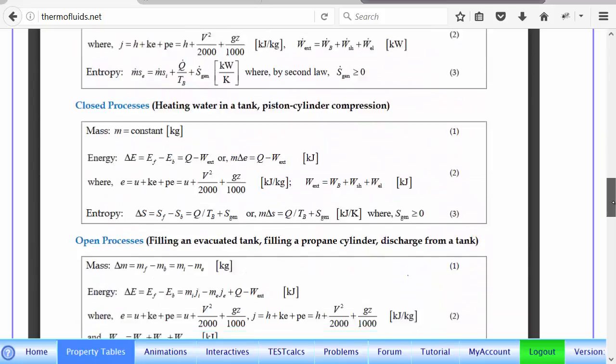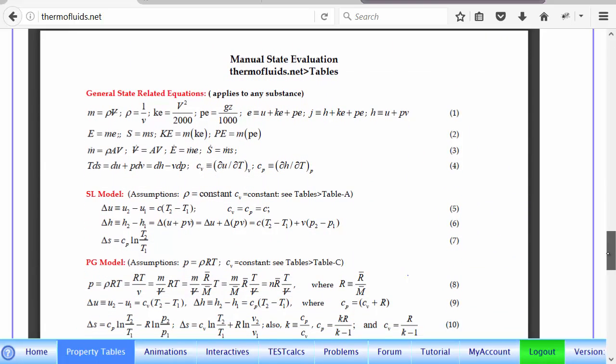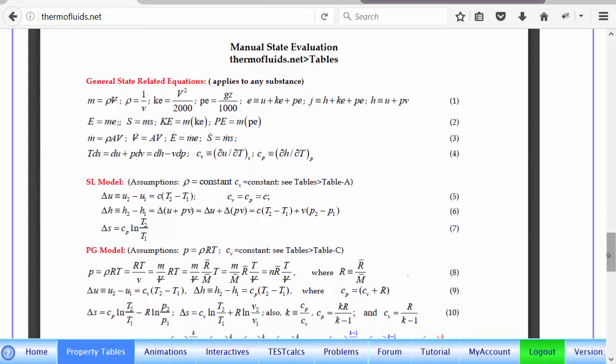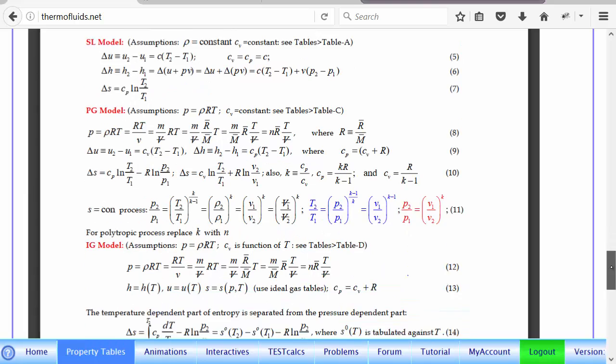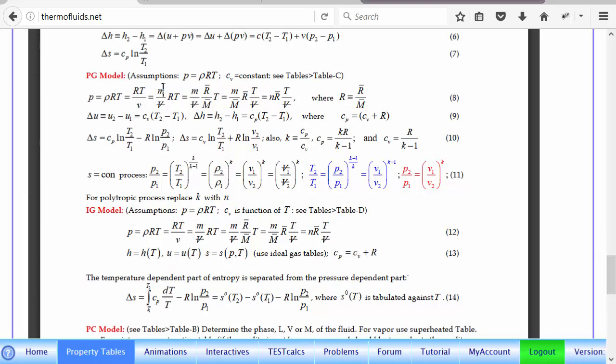I suggest you print that out. It has all the governing equations for different kind of systems. And here, this is what we are after. This is the equation for different material models. And we are using the PG model. So if you use the PG model, you will notice that for the PG model, if entropy remains constant, this is the formula for finding delta U, delta S, delta H, etc. But a special case happens when delta S equals 0, S equals constant.